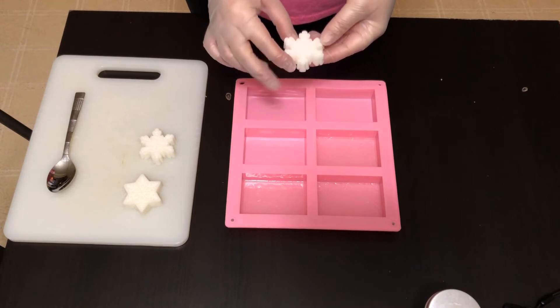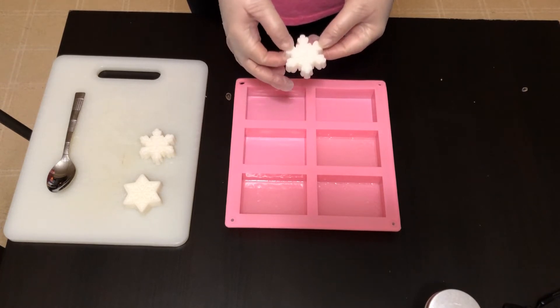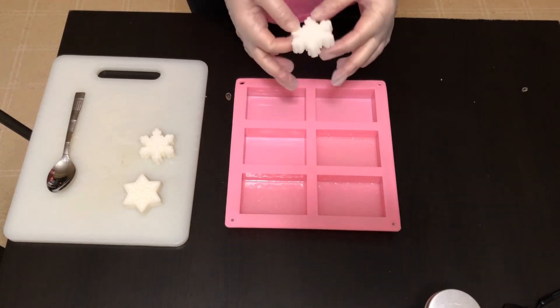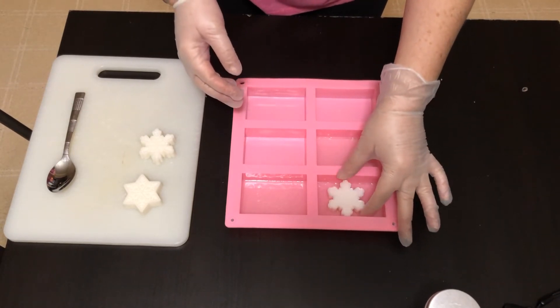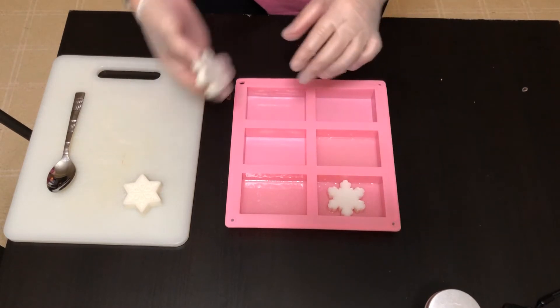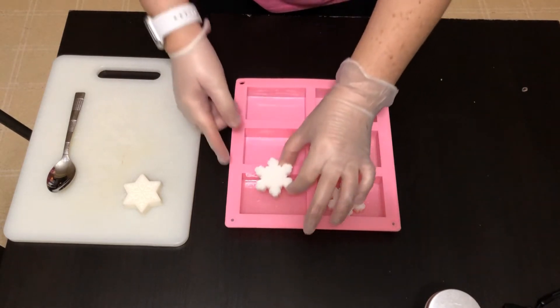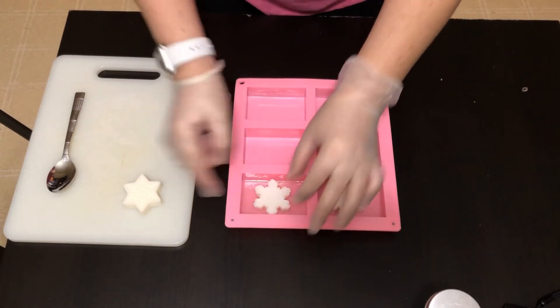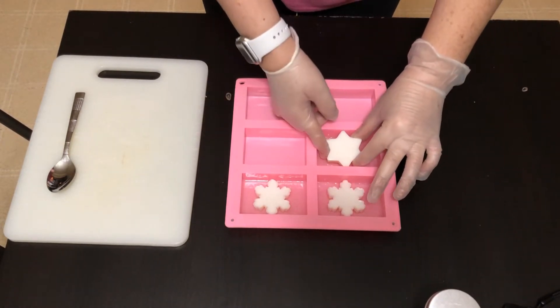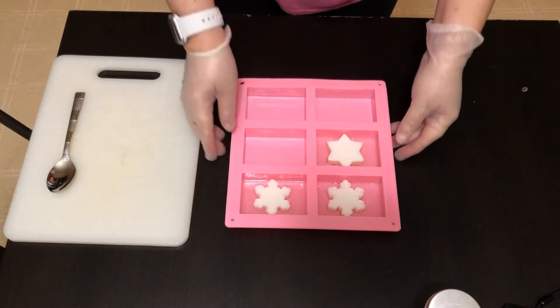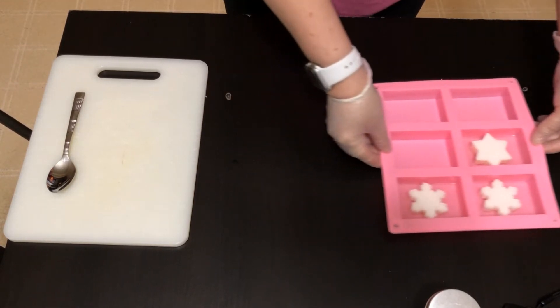I made these just with a snowflake mold that I had gotten from Michaels. So I'm going to go ahead and just place one of those in the middle of each of the bars just like that and then we're going to just scoot that off to the side.